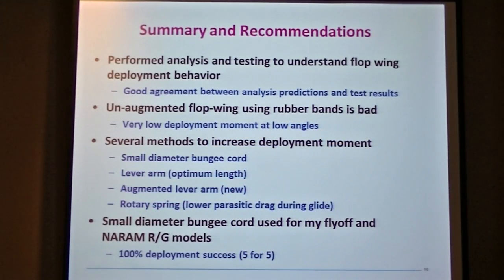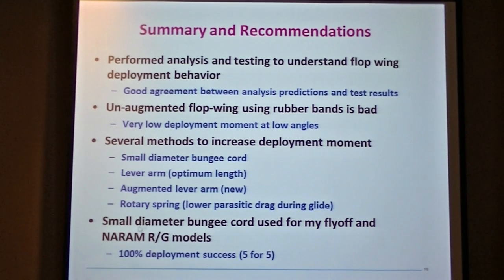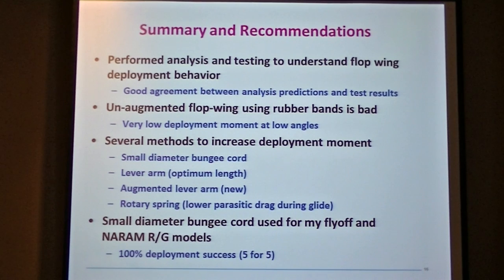In summary, the objective was to understand the drivers of plop wing deployment. This has shown it's basically geometry — caused by F3 times the moment arm, or how much moment you can produce at the plop hinge. The un-augmented wing is really bad, and an un-augmented wing with dihedral is even worse. Any of the four new methods — including the new lever arm with clip concept — are good approaches for achieving reliable plop wing deployment. I flew five plop wing gliders at the fly-off last weekend and here at the contest, using the bungee cord method because it's easy and quick to install, and got five for five successes — or ten for ten if you count two wings per flight.